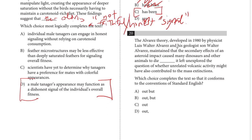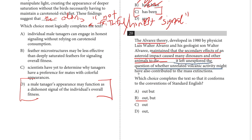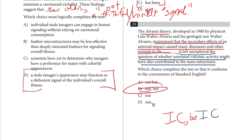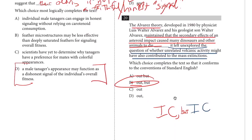Number twenty: the Alvarez theory, developed in 1980, maintained that the secondary effects of an asteroid impact caused many dinosaurs and other animals to die out — but it left unexplored something else. We definitely need a comma here. We've got our first independent clause up through 'die out,' then a comma, then a second independent clause. To join two independent clauses with a comma, you also need a conjunction — a FANBOYS conjunction such as but, for, and, nor, but, or, yet, so.